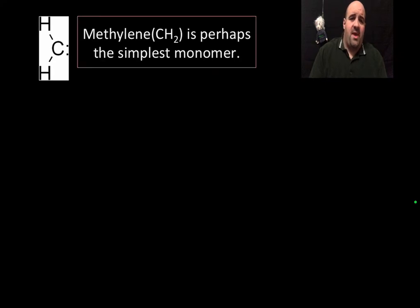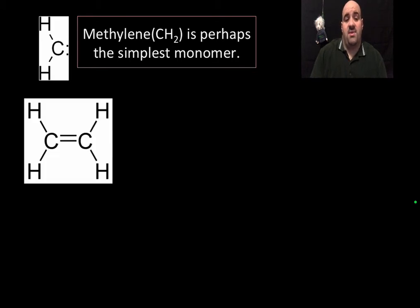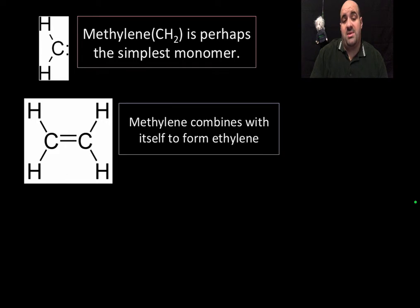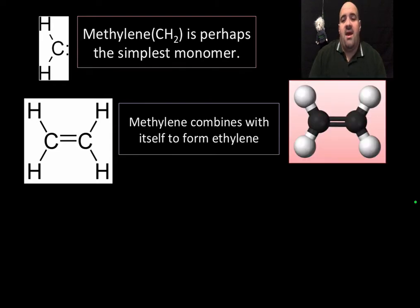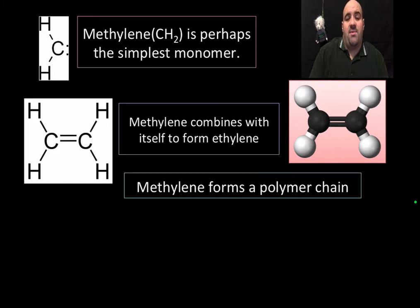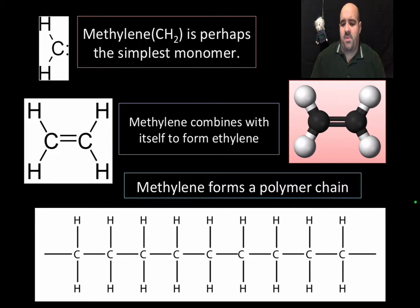So we have CH2, and that's methylene. That's perhaps the simplest monomer that we can talk about. And of course, it likes to connect with itself, forms a double bond. That would be C2H4, methylene, or it forms ethylene. Methylene forms with itself, combines with itself to form ethylene. And it has a structure that looks like that. But this is a monomer, and methylene is going to keep combining with itself to form a polymer chain, and that's what we mean by a polymer. We have CH here, CH2, and it just keeps connecting with itself until a very long chain of molecules. It likes to connect with itself and form bonds of that sort. So this is a polymer chain. This is the simplest monomer we can come up with, and this is a long polymer chain of that simple monomer.